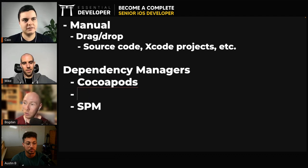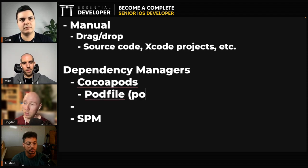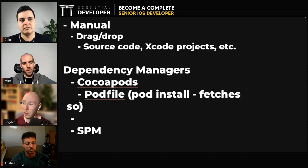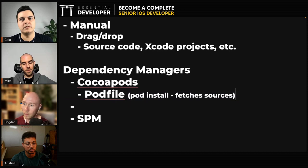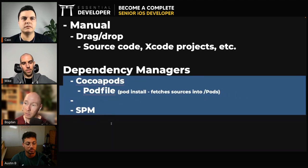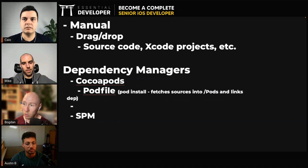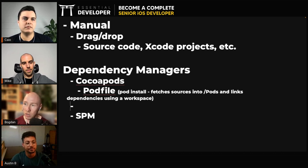Following the historical direction, CocoaPods was the first. CocoaPods uses a pod file — a text file where you specify all your dependencies — and you run a command like pod install. CocoaPods fetches all the sources, resolves the versions, and puts them in a pods folder inside your project folder. It also creates an Xcode project with targets for each dependency linked to your targets, so when you build your target, you implicitly also build all these dependencies.